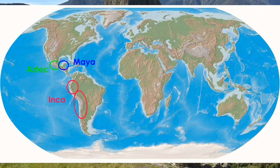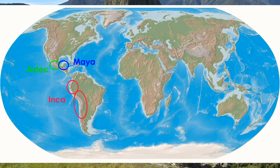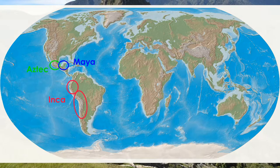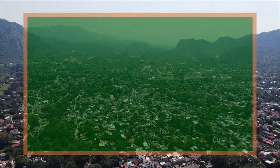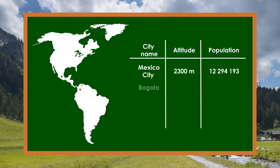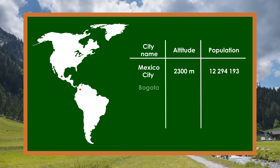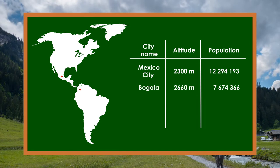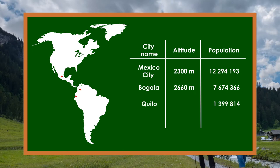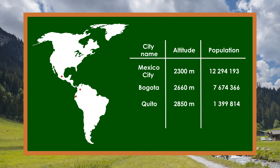Settling there was continued by Spanish colonists. There are cities set above 2,000 and 3,000 meters from sea level. Mexico City, with a population of more than 12 million people, is at 2,300 meters. Bogota in Colombia, with over 7 million people, is at 2,660 meters. Quito in Ecuador has a population over 1 million, with an altitude of about 2,850 meters. And finally, officially the highest capital in the world, La Paz in Bolivia, is at 3,660 meters above sea level.